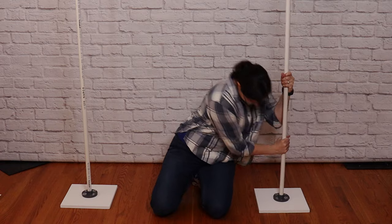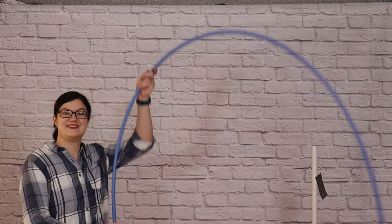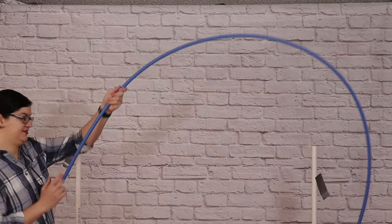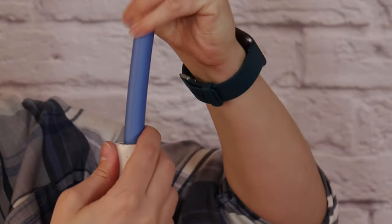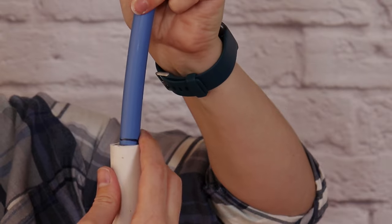Once those are secure in the bases, we can then move up and insert our PEX pipe into the top of our PVC pipes. So take one end and insert it down into the PVC pipe until you get to that first mark.